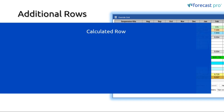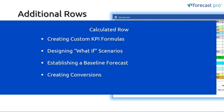Next, we'll look at the calculated rows. With all of this information — the conversions as well as the external data — we might want to build calculations off of those. A common example would be creating a custom KPI formula to look at the difference between our current forecast and an outside forecast like a customer forecast. We can also do what-if scenarios, such as adding 5% on top of our current forecast. This can establish a different baseline forecast, or if you want to create conversions off of external rows, you can do that with the calculated rows as well.